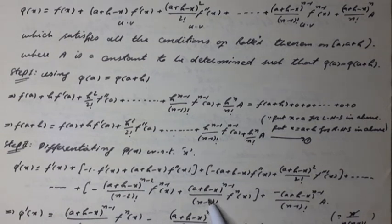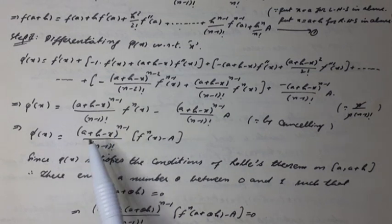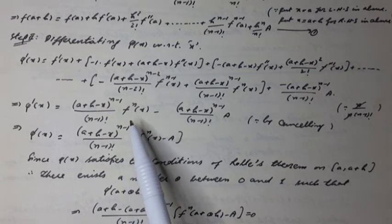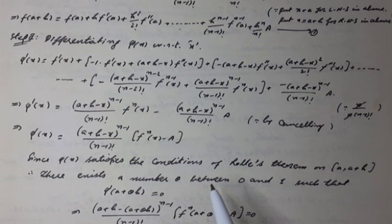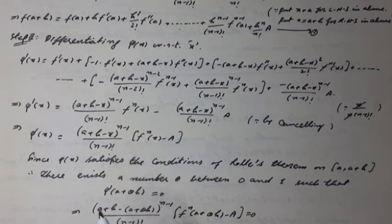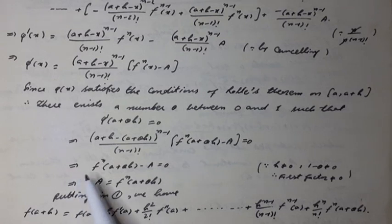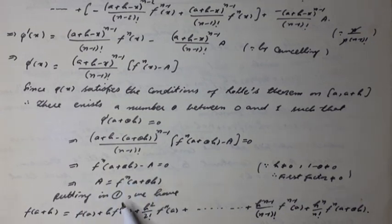After cancellations, we are left with: φ'(x) = (a+h−x)^(n-1)/(n-1)! · [f^(n)(x) − A]. Since φ(x) satisfies all conditions of Rolle's theorem on [a, a+h], there exists a real number θ between 0 and 1 such that φ'(a+θh) = 0. Substituting x = a+θh gives f^(n)(a+θh) − A = 0, hence A = f^(n)(a+θh). Substituting into Equation 1 completes the proof.